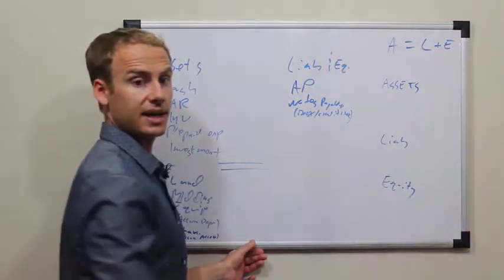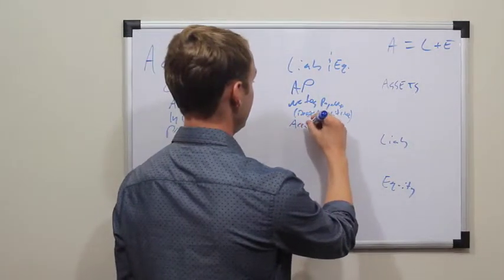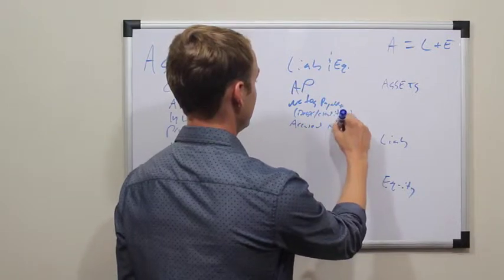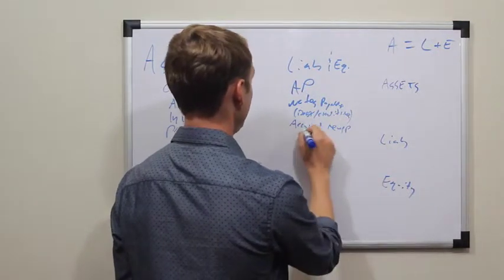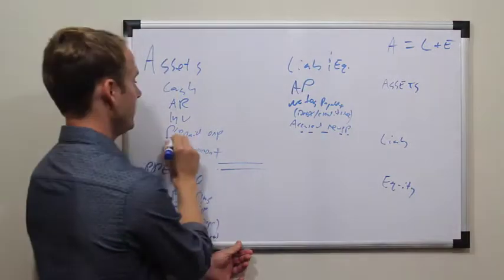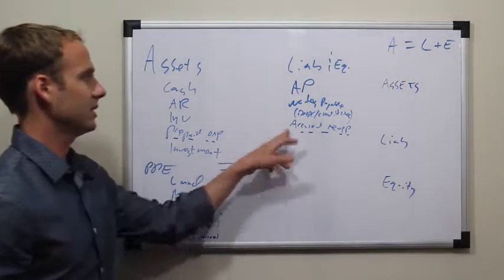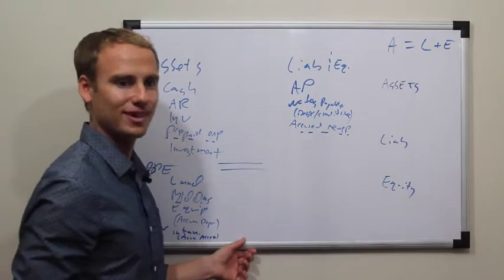We also have accrued expenses to be understood. Accrued expenses, prepaid expense, opposite. Note, one's an asset, one's a liability. So you're going to want to have to memorize that.